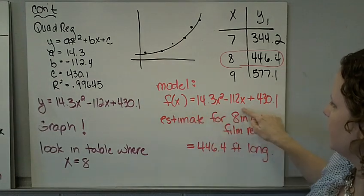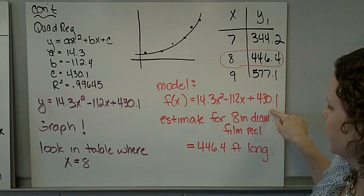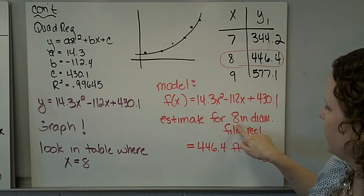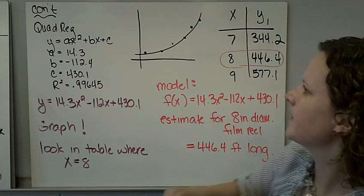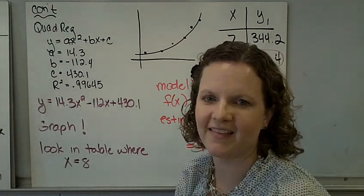So right here we have where X equals 8, Y1 is 446.4. So our model, what they're looking for, the function, and then we use that and estimate for an 8 inch diameter reel film. And we get the length of our reel. That's all we have for today. Thanks.